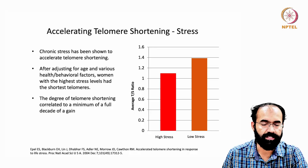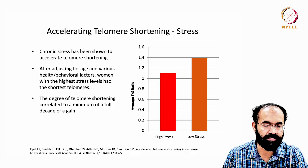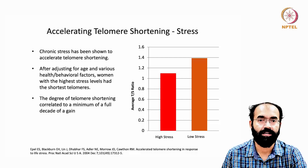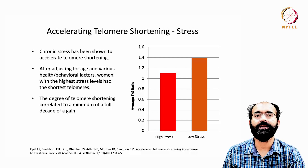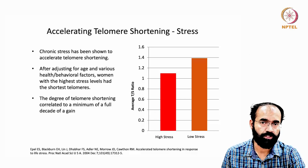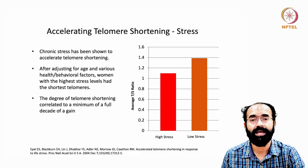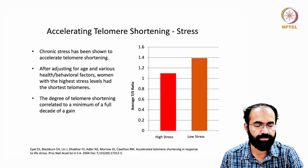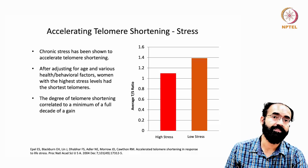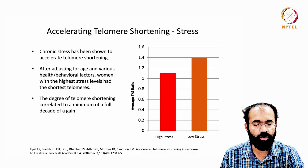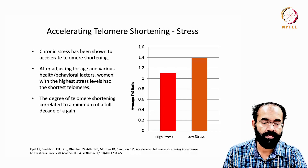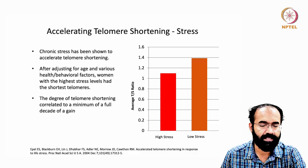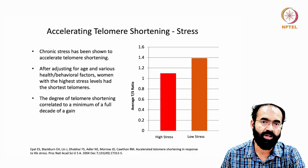After adjusting for age and various health and behavioral factors, women with the highest stress levels had the shortest telomeres. This has been normalized across age, health parameters, and behavioral factors. The degree of telomere shortening correlated to a minimum of a full decade of aging gain — indicating that what is lost through stress-driven shortening can take around 10 years to gain back. There is a strong connection between stress and aging.